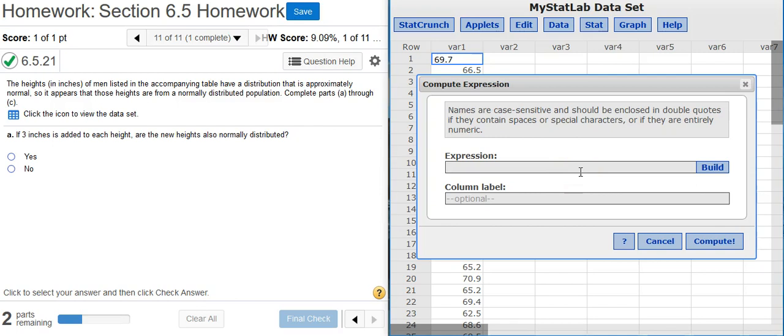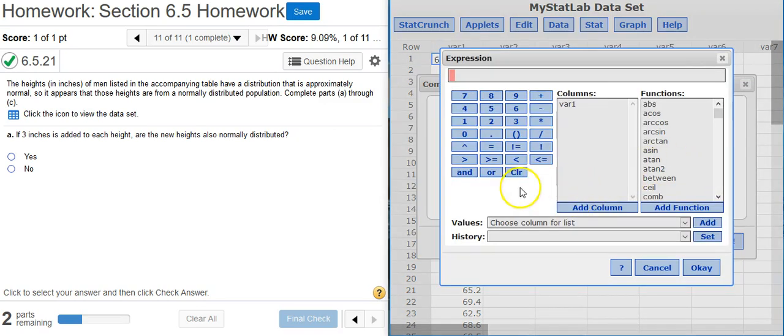And here in the Build window, what we want to do is enter the expression that the computer needs in order to transform the data. To do that, when you look over here, we're going to add 3 inches to each of our height. So the first thing we do is put in the column where our data is located. And notice, I have to select the column and press Add Column down below. Just selecting the column doesn't do anything to change my expression or build it. When I press Add Column, notice how it appears here. So now we're starting to build it. So we take the value that's in that first column and we're going to add 3 inches. So I press Plus 3. If I want, I could type that in on my keyboard, on my computer. It works just as well. This is the expression we need to add 3 to each of those values. So I go ahead and click OK.